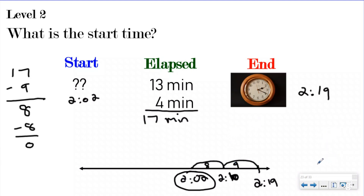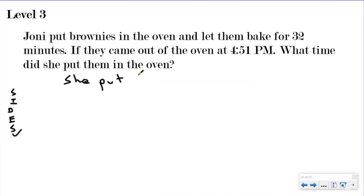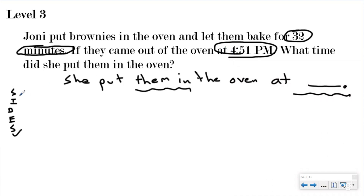Let's take the leap to a level three question — level three is when we have word problems. If you're an Instructor Beats fan you know we love our SICE check strategy, where you write a statement first. My question says 'What time did she put them in the oven?' So I'm going to say: 'Joni put the brownies in the oven at blank time.' When I go back and look at the problem, I'm looking for anything about what she put in the oven and anything about a time. So: Joni put brownies in the oven and let them bake for 32 minutes — that's about time, that's important. They came out of the oven at 4:51 PM. Because I wrote a statement, I identified that this is an elapsed time problem.